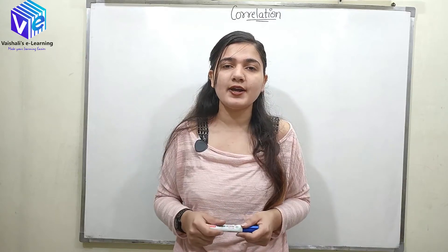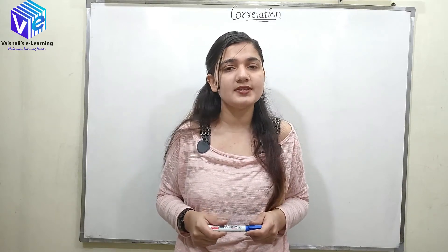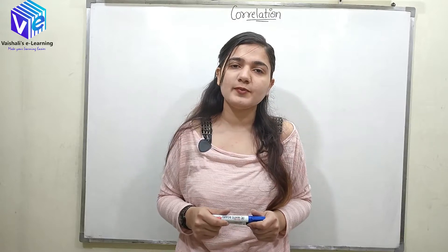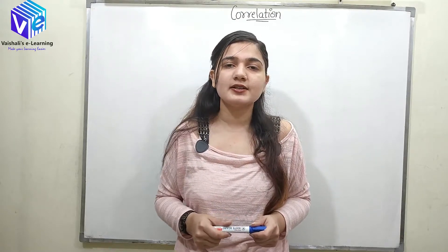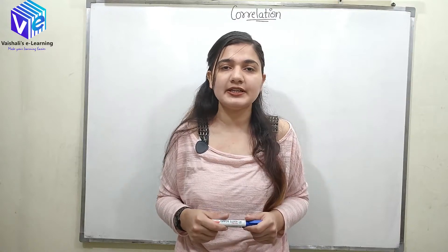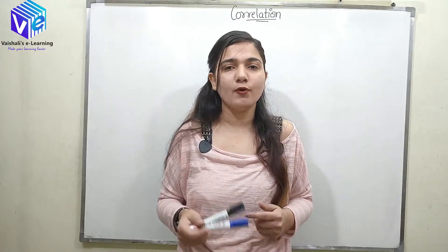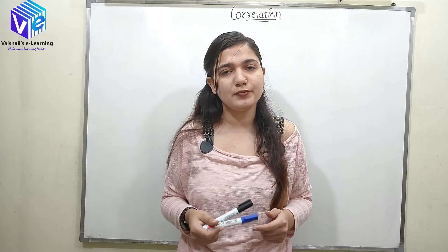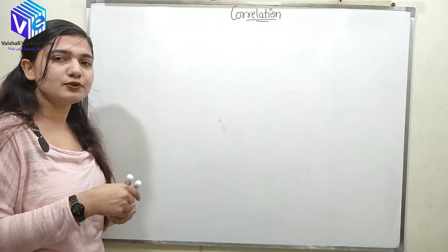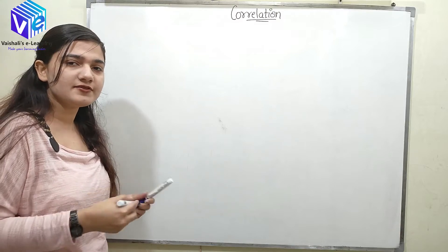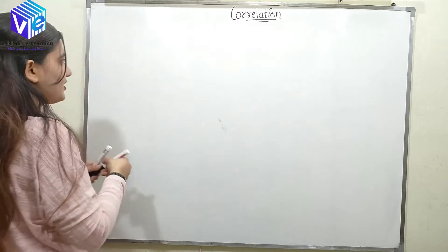I hope you remember how to find two random variables from the sample space. If not, you can watch my previous video on the introduction to random variables, where I discuss the concept in detail. Now about correlation: correlation gives me the dependence of one random variable on another random variable.